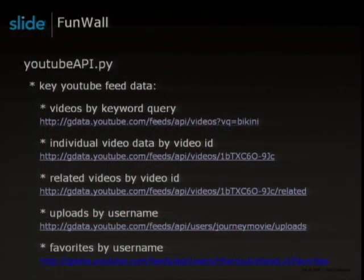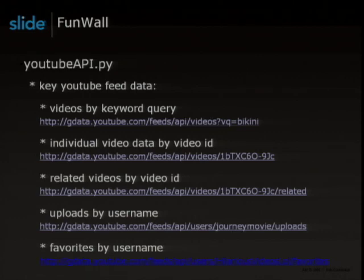The most important parts of the data feed we need from YouTube are videos by keyword query, which gives us back a list of videos, followed by video data by video ID. Sometimes we're interested in related videos, so we use the video ID for that. Or if we're interested in the producers of videos, we look up the uploads by username or favorites by username.